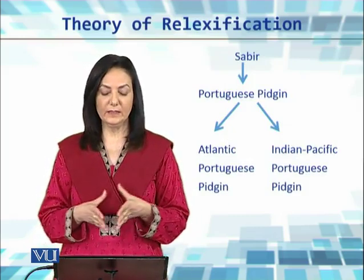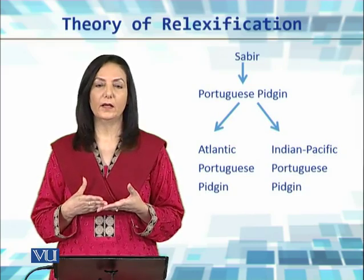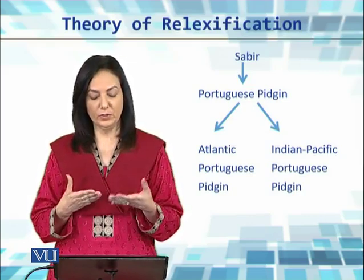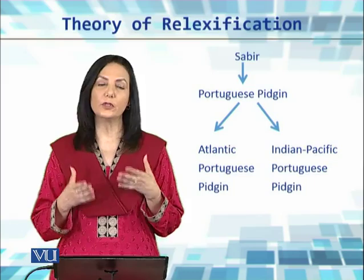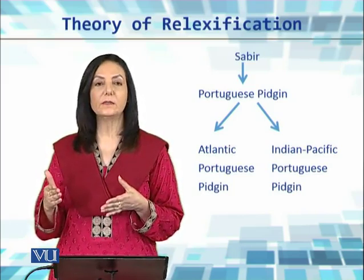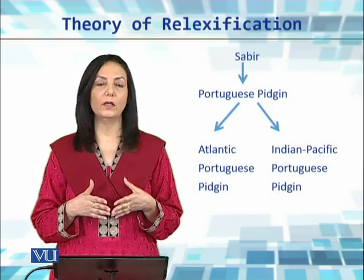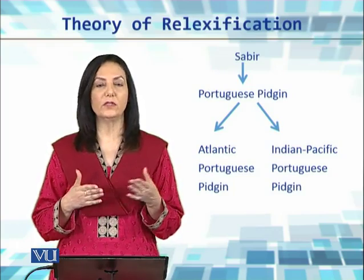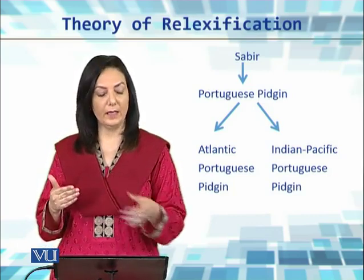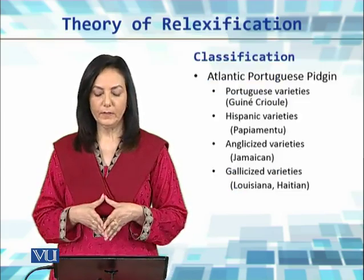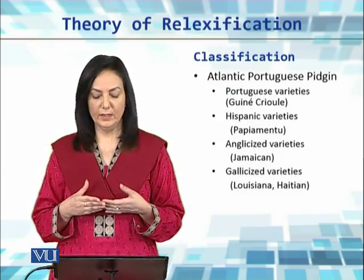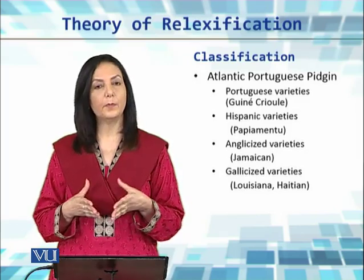We can see that Sabir branched into or led to the creation of a Portuguese pidgin. This Portuguese pidgin then branched into the Atlantic Portuguese pidgin and the Indo-Pacific Portuguese pidgin, depending on whether it was used by countries along the Atlantic Ocean or by people living in countries along the Pacific and Indian Oceans. The Atlantic Portuguese pidgin includes varieties such as Guinea Creole, which is a Portuguese variety.